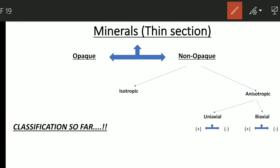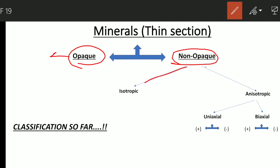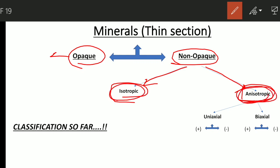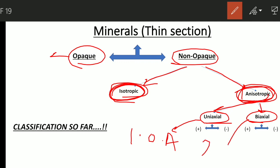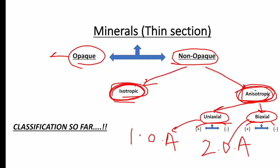So now we have seen this classification: first, the broadest classification of opaque and non-opaque minerals. Next, non-opaque minerals are isotropic or anisotropic — isotropic having the same velocity in all directions and anisotropic having different velocities in different directions. Then anisotropic minerals are divided into uniaxial (one optic axis) and biaxial (two optic axes), each further divided into positive and negative. Remember this — it is very important.